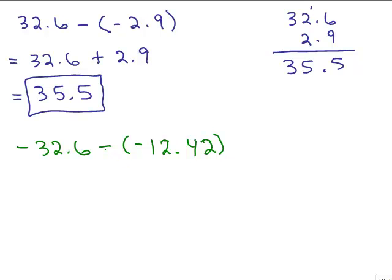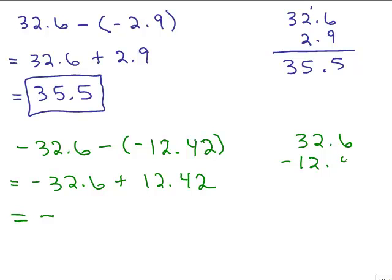Again, we've got subtracting a negative number. So we want to rewrite that as adding the opposite. So this becomes negative 32.6 plus 12.42. Now what do I have going on here? I'm adding a negative and a positive this time. Which is the answer going to be, positive or negative? There's more negatives. The answer is going to be negative. So I'm adding different signs, so this time I take their difference. So the bigger number, absolute value, is 32.6. I'm going to subtract 12.42.